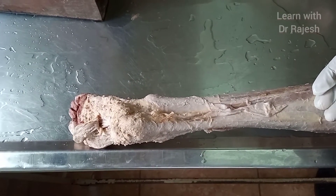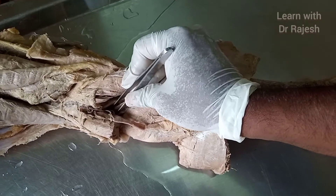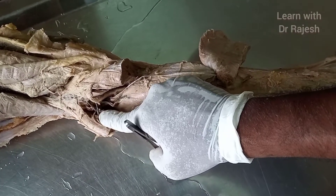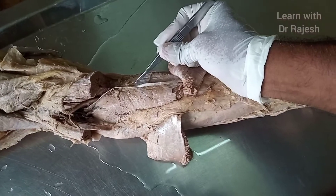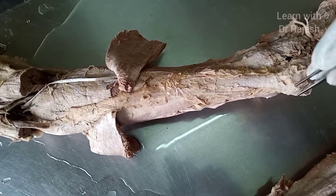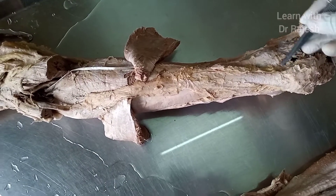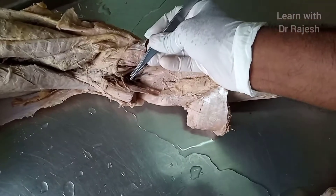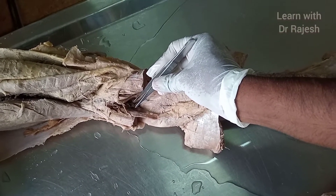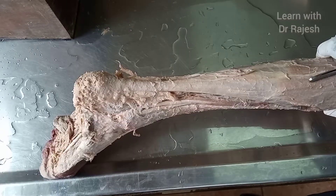The plantaris takes origin from the lateral supracondylar ridge of the femur, just above the origin of the gastrocnemius. Its tendon also gets inserted onto the posterior aspect of the calcaneum. Since it crosses the ankle, it is a weak plantar flexor. It may also act on the knee joint, causing weak flexion at the knee.